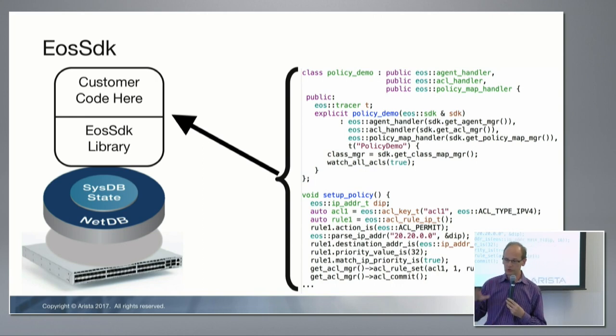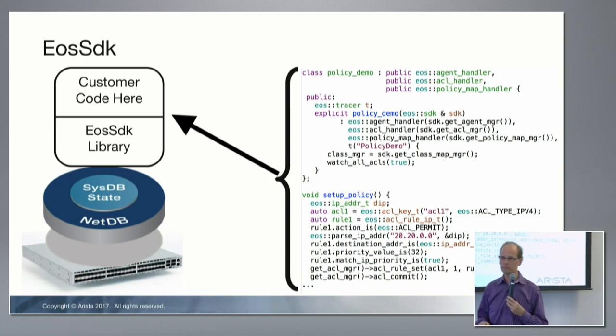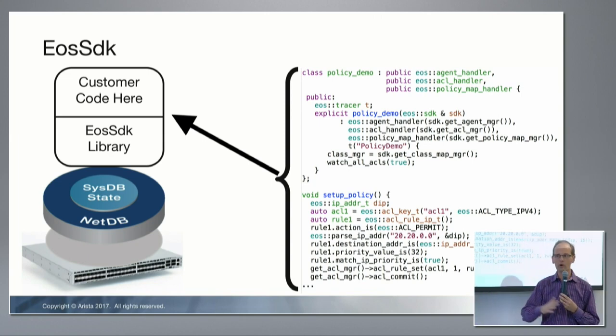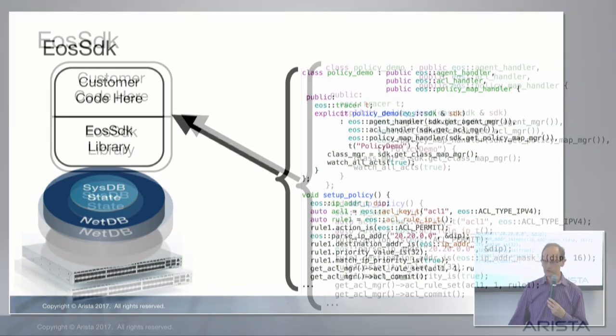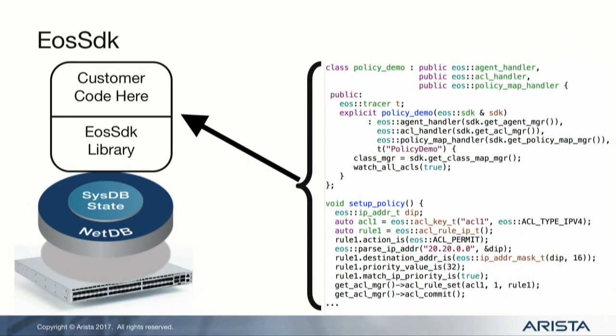You write your own code and compile it against a stub library we provide, which lets you run and test your code off-box. You then take the same binary and relink it against the production EOS SDK library on-box. At that point you're connected to the actual system database and you're live in the actual network. There are not too many customers who use this, but it's been very high impact in some of the world's largest data center IP networks and wide area networks.